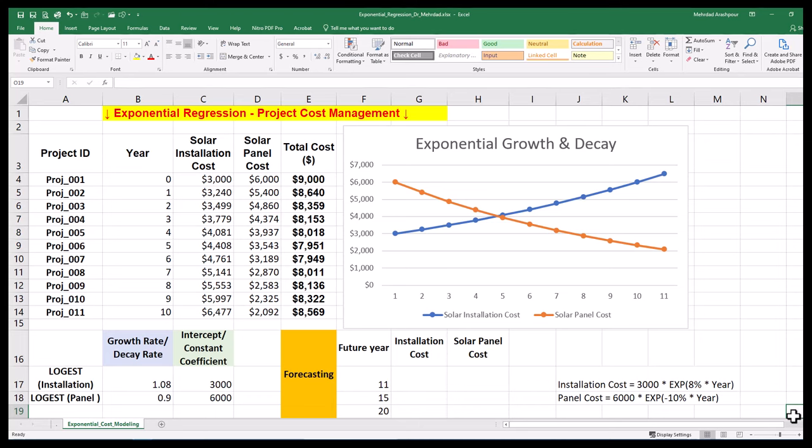Step three is forecasting future scenarios based on exponential growth or decay modeling. For future years beyond the data range, you will get the forecasted values. We can predict the installation cost in year 11 as an example using our model. This equals 3000 times EXP of 8% times 11. This forecast can be replicated for future years including 15 and 20.